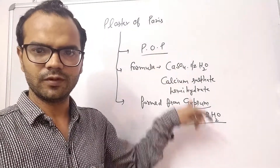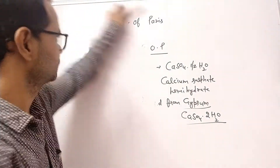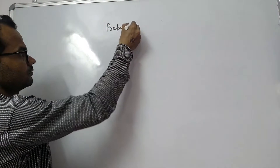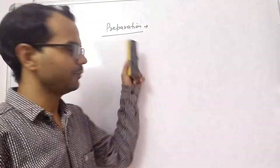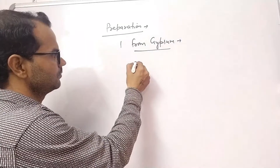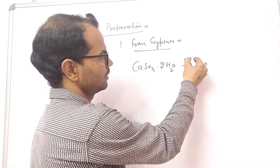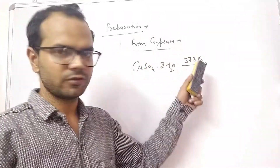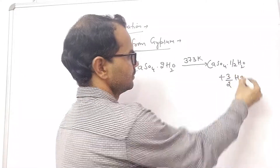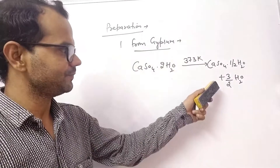We can prepare POP from gypsum by simply heating it. When gypsum is heated at 373 Kelvin, it loses three-fourths of its water molecules and the remaining compound is calcium sulfate hemi-hydrate, which is POP. The equation can also be written in whole numbers by multiplying through by four.